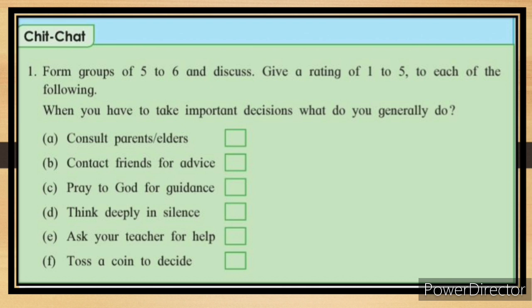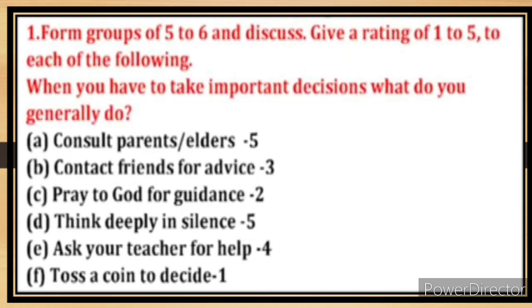Options include: consult parents or elders, contact friends for advice, pray to God for guidance, think deeply in silence, ask your teacher for help, or toss a coin to decide. Suggested ratings: consult parents — five; contact friends for advice — three; pray to God for guidance — four; think deeply in silence — five; ask your teacher for help — four; toss a coin to decide — one.